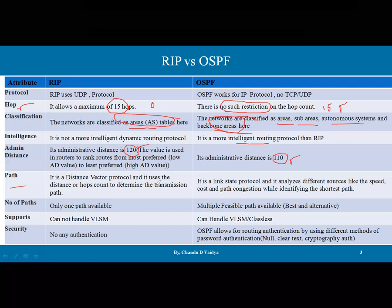RIP is a distance vector protocol and uses hop count to determine the transmission path — the path with fewer hops is selected as the best path. OSPF is a link state routing protocol that analyses multiple parameters like speed, cost, path congestion, and traffic to identify the shortest path. This combination of parameters makes OSPF more intelligent. Additionally, RIP has the count-to-infinity problem in distance vector routing, while OSPF makes decisions based on multiple parameters to avoid such issues.